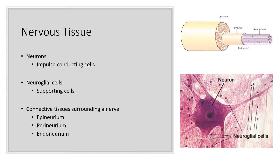The nervous system is primarily made of nervous tissue, which contains neurons—the impulse-conducting cells. It also contains neuroglial cells, which are the supporting cells. There are three types of connective tissues that surround a nerve: the epineurium, the perineurium, and the endoneurium. So a nerve is primarily made of both nervous tissue and connective tissue.